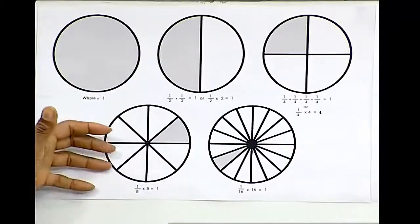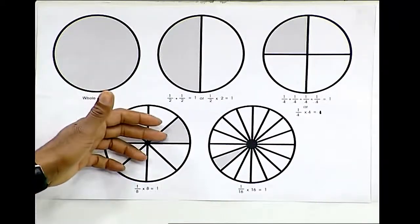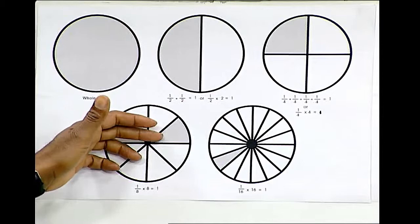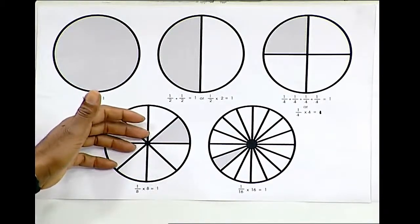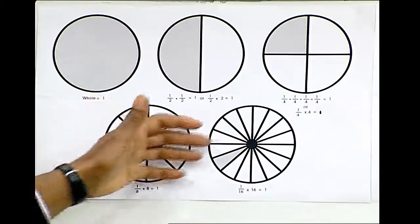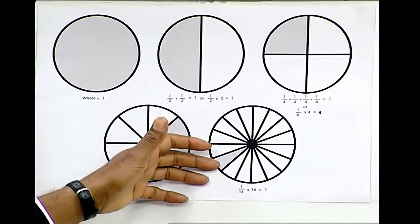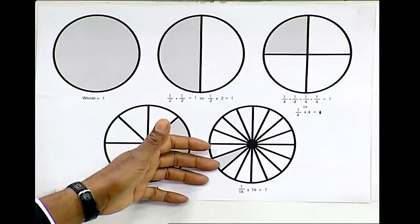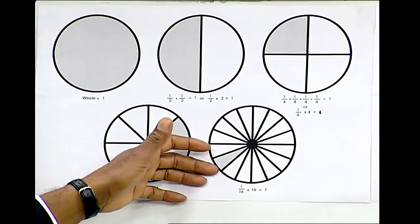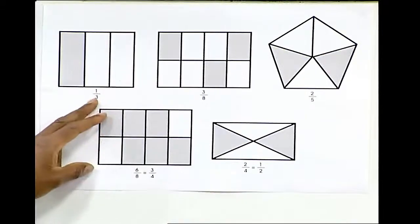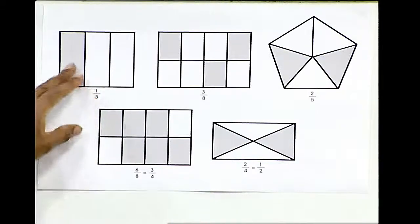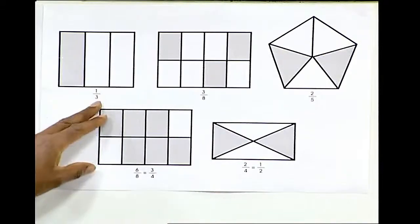This particular circle shows one-eighth of this circle is shaded. One-eighth times eight is equal to one. This circle shows 1/16th of this circle is shaded. 1/16th times 16 is equal to 1. This shows 1 part out of 3 parts which are shaded, which is equivalent to 1/3.